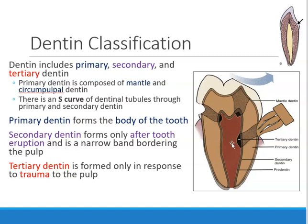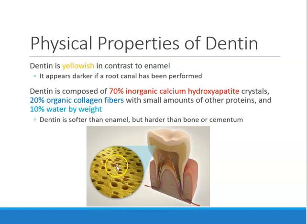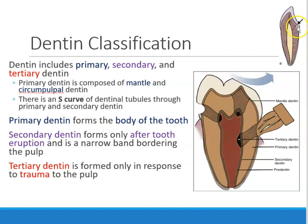If you look at the shape of the dentinal tubules — remember, these are the dentinal tubules, these holes that are actually tubes — the shape is actually an S shape. Especially in the crown, the tubules take an S shape. In the root section, it's more of a straight line, but definitely in the coronal crown section, they take an S curve.